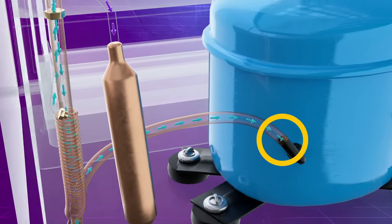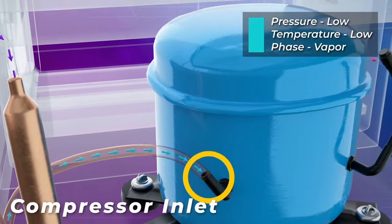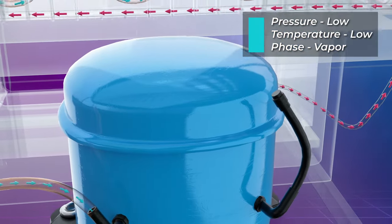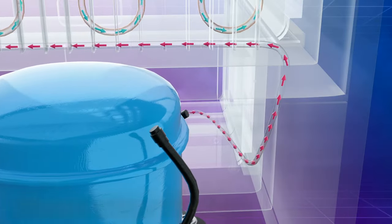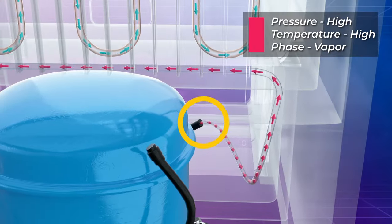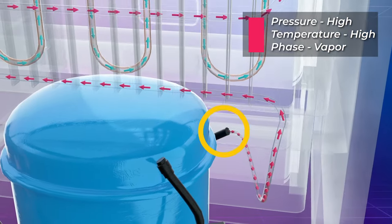The cycle begins with the refrigerant entering the compressor as a low-pressure, low-temperature vapor. The compressor pressurizes the refrigerant and it exits as a high-pressure, high-temperature vapor.